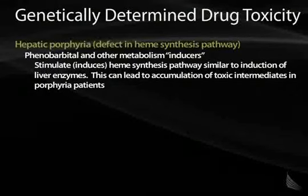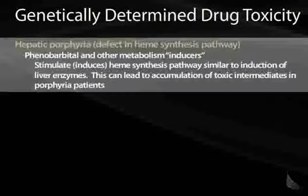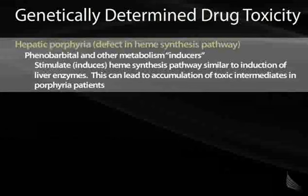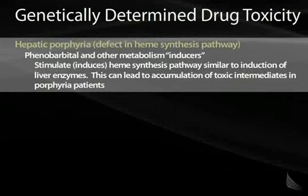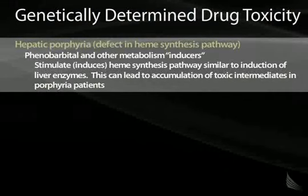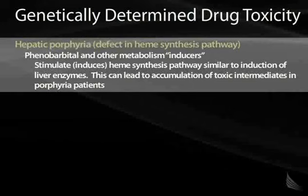Another example of genetically determined drug toxicity is hepatic porphyria, which is a defect in heme synthesis pathways. Other inducers, such as phenobarbital, can stimulate the heme synthesis pathway. This can lead to toxic intermediate accumulation and cause hepatic disease.